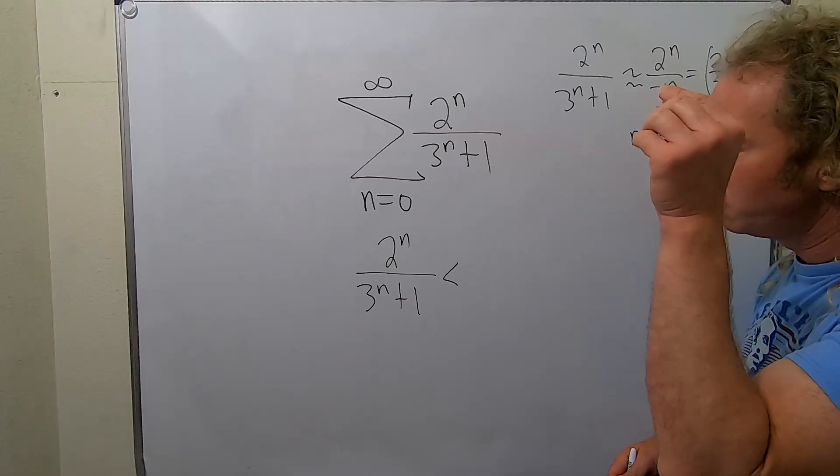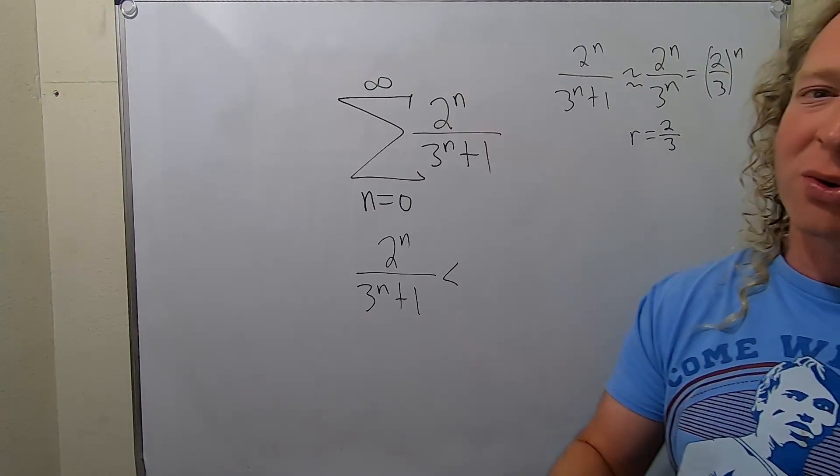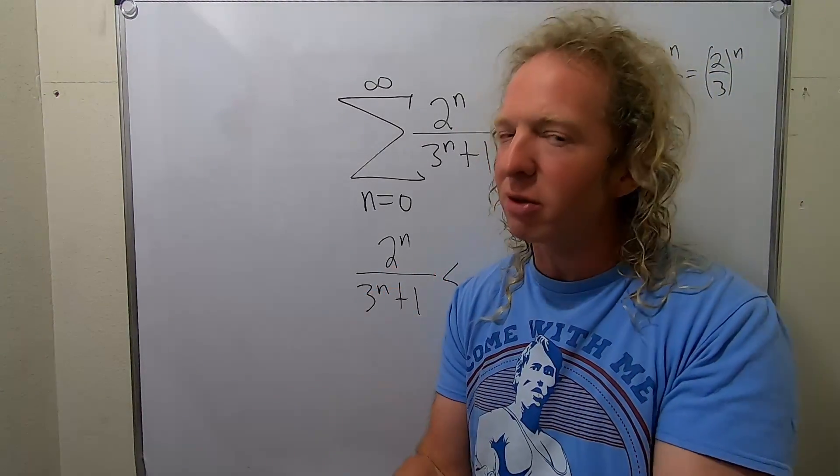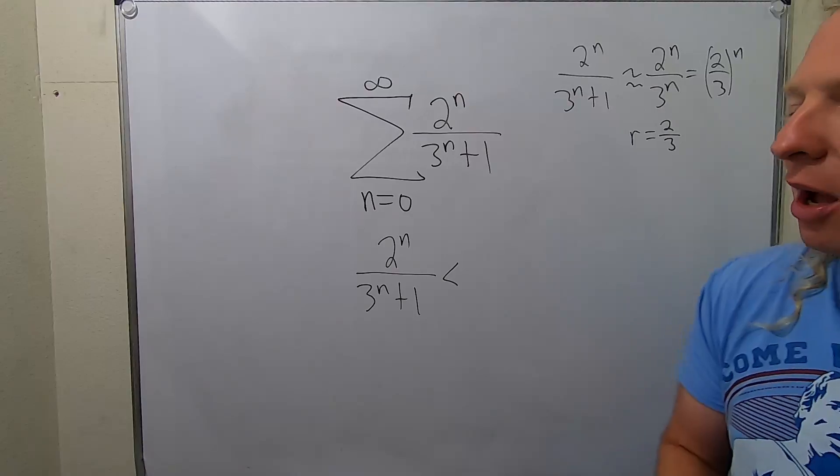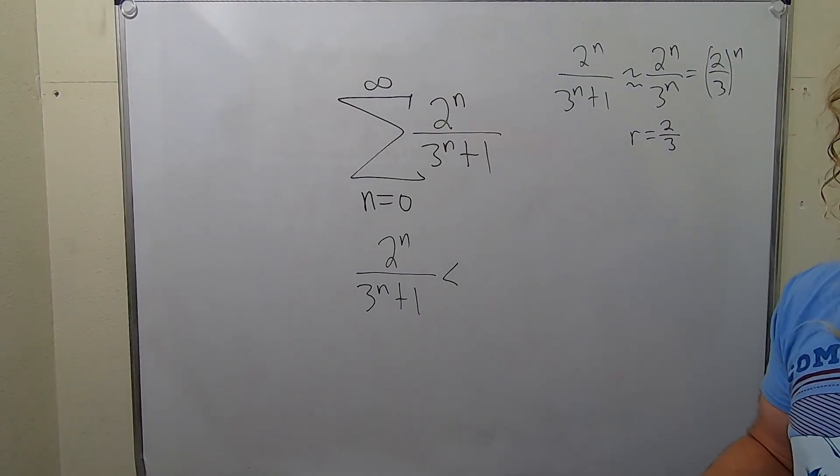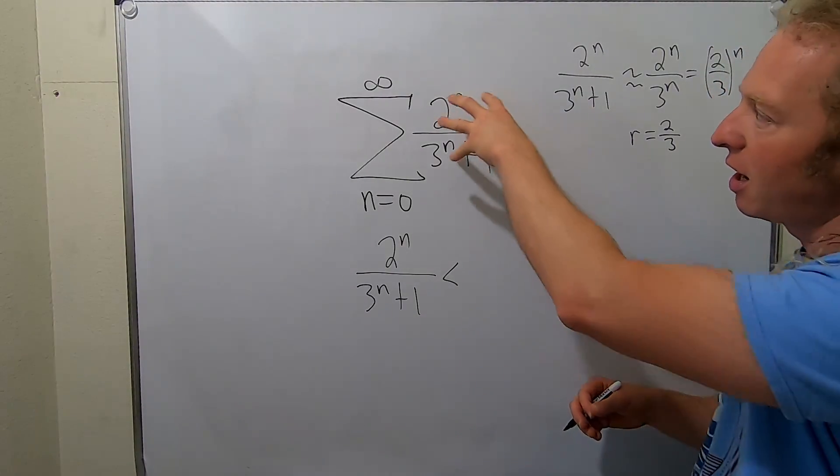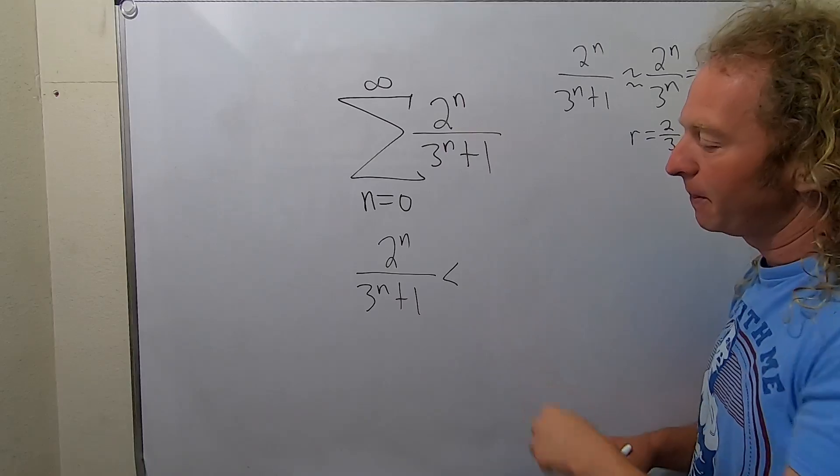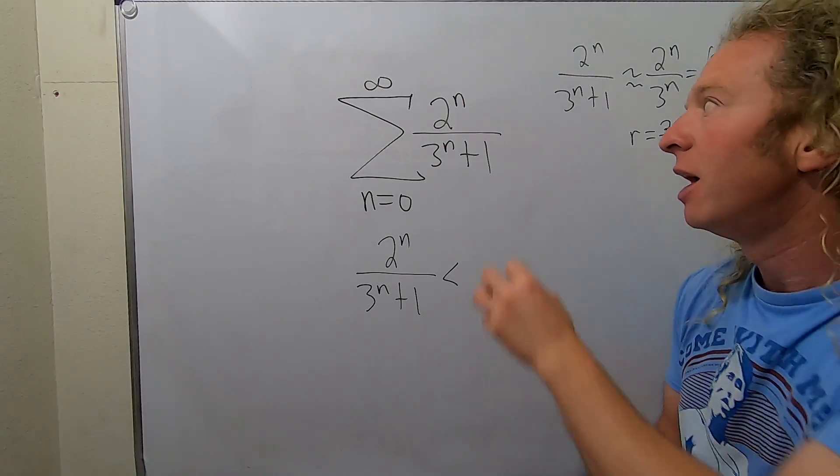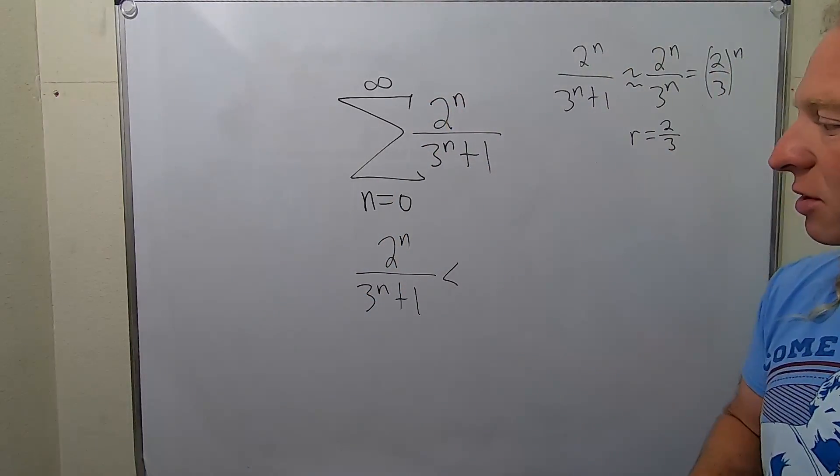So when you're showing convergence, you put a less than here. When you're showing divergence, you put a greater than there. That's how I do it. I pretty much have it memorized. If I'm trying to show convergence, I write this down and I put a less than. If I'm trying to show divergence, I write this down and I put a greater than.